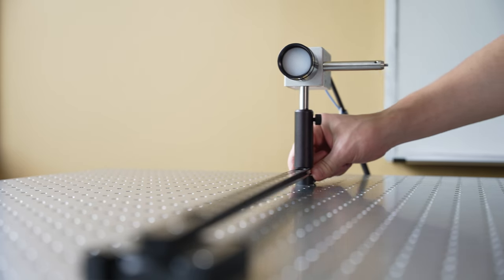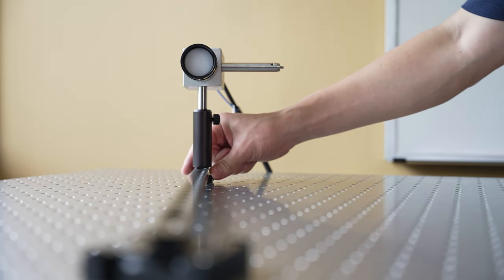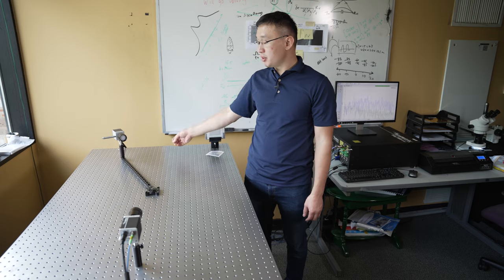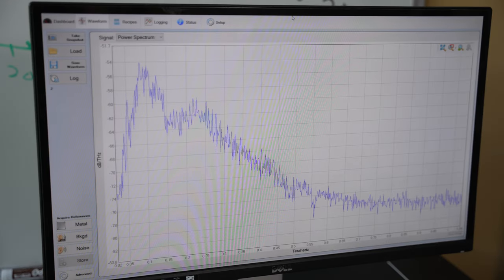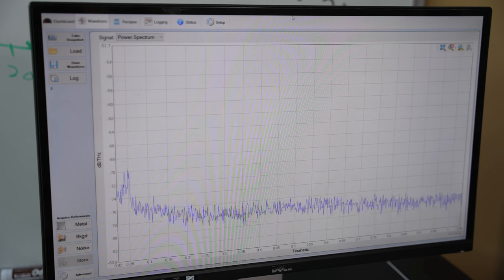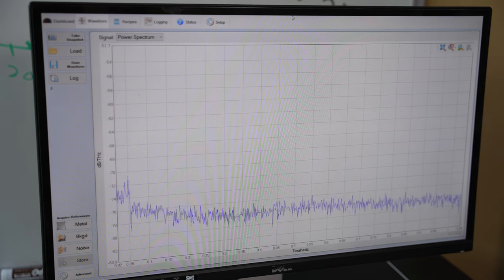If you consider an eavesdropper who is angularly separated from the legitimate receiver, you can see in the screen that eavesdropper is not receiving any data. She is essentially observing the noise.